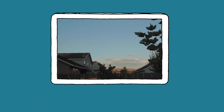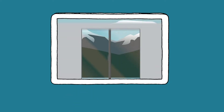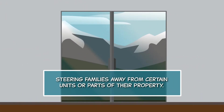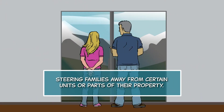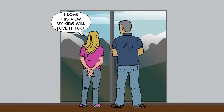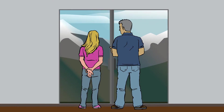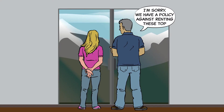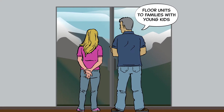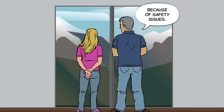Examples of actions that would violate the Fair Housing Act include steering families away from certain units or parts of their property. [Tenant]: I love this view. My kids will love it too. [Landlord]: Sorry, but we have a policy against renting these top floor units to families with young kids because of safety issues.